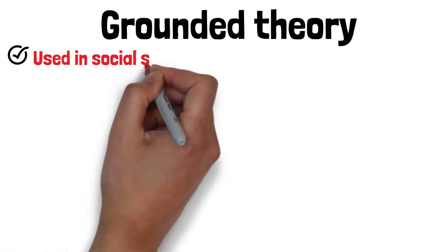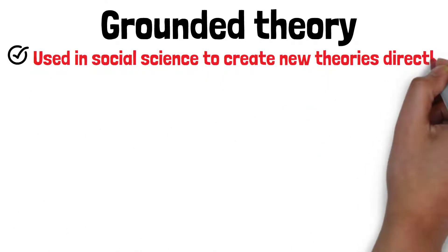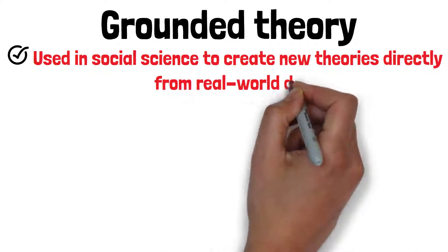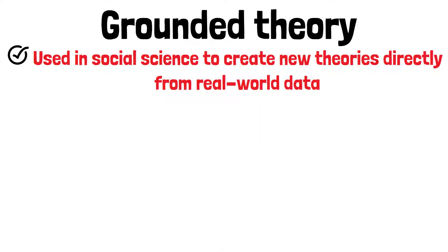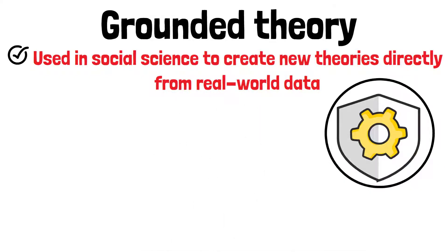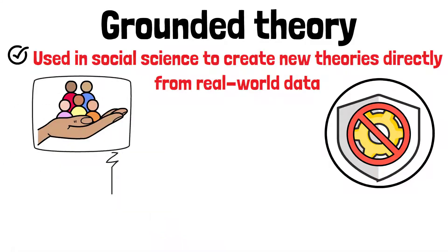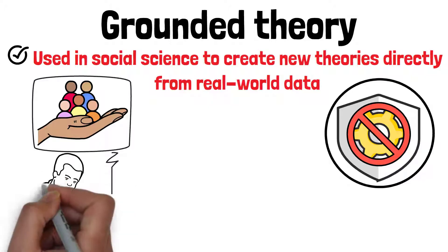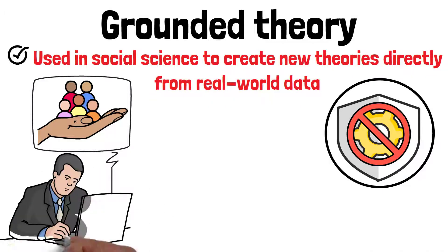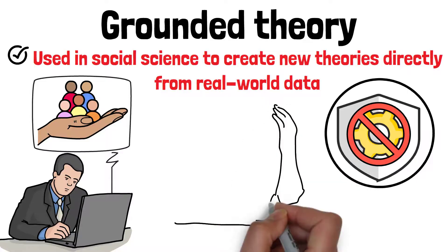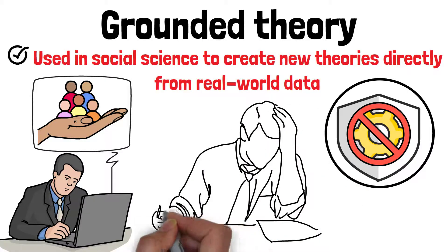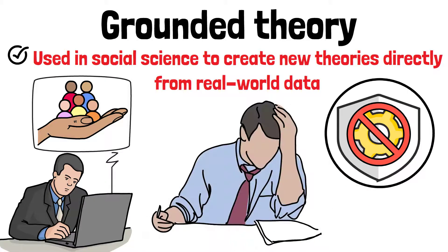Grounded theory is a research method used in social science to create new theories directly from real-world data. Unlike traditional research methods, grounded theory does not start with a hypothesis. Instead, researchers begin by collecting data and then allow themes and ideas to emerge naturally as they analyse the information. This approach is particularly useful for studying new or complex topics where little is known.